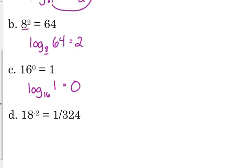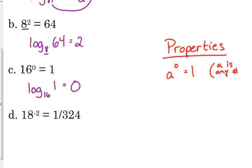That's another property. So, over here to the side, I want you to write these two properties. a to the 0 is 1. a is any constant. And then you also need to write that log base a of 1 is equal to 0. Again, a is any number.